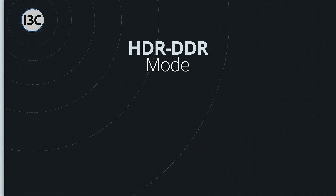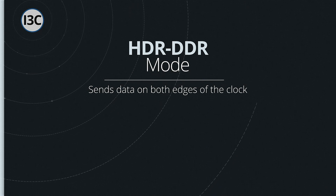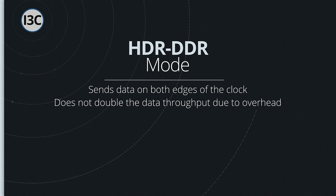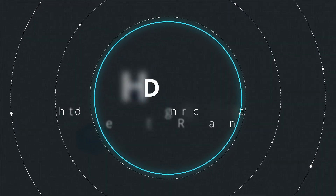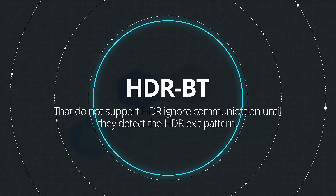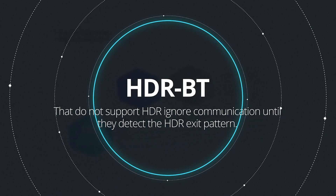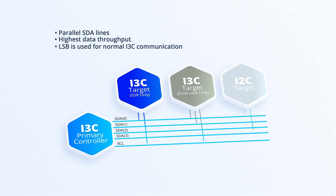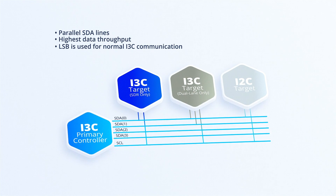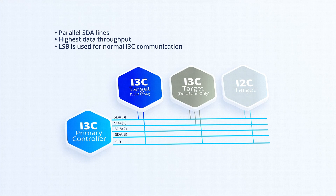HDR DDR is a mode that uses both edges of the clock to transmit data, which significantly increases the data rate of the bus, although it does not double the data throughput because of extra overhead in the protocol. Finally, there is HDR Bt. Because it uses multiple data lines at the same time for more parallelism, HDR Bt has the highest data throughput of any HDR mode. For bus compatibility, only the LSB of the SDA line is used for normal single data rate communication, and HDR Bt supports dual and quad-line configurations.